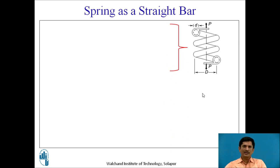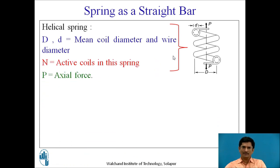Let us consider spring as a straight bar. This is a helical compression spring we are going to consider as a straight bar. For this helical compression spring, D and d are the mean coil diameter and the wire diameter respectively. N are the total number of turns and P is the axial force applied on the spring.